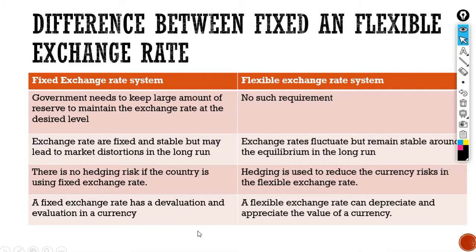Under the fixed exchange rate system, the government needs to keep a huge amount of reserves to maintain the exchange rate at the desired level, because if the government wants to intervene it requires a large amount of foreign exchange reserves. However, under the flexible exchange rate system, the government does not intervene and does not require any exchange rate reserves.